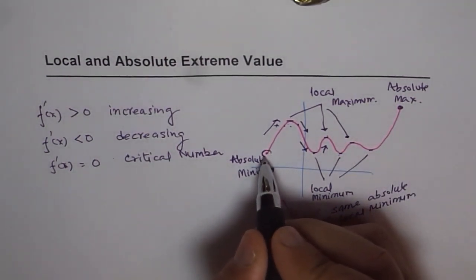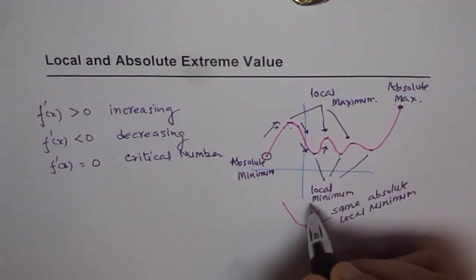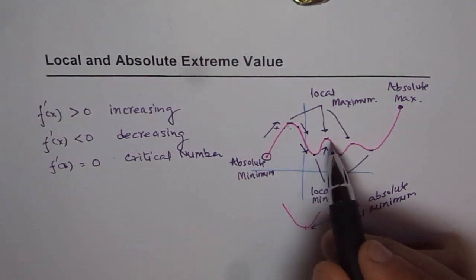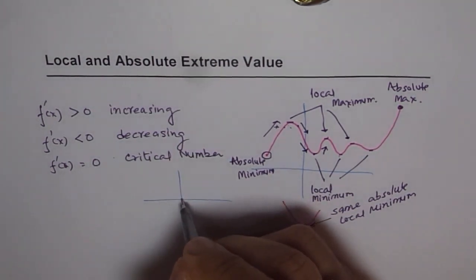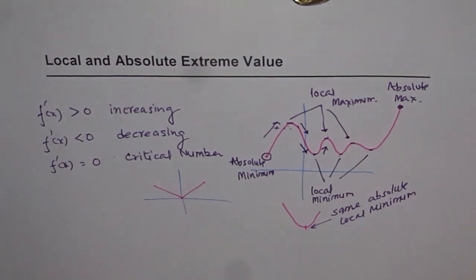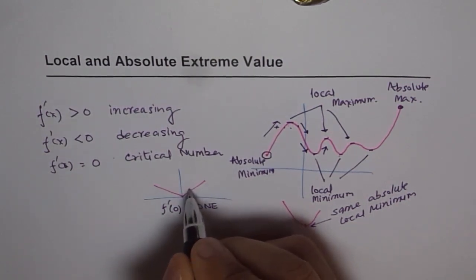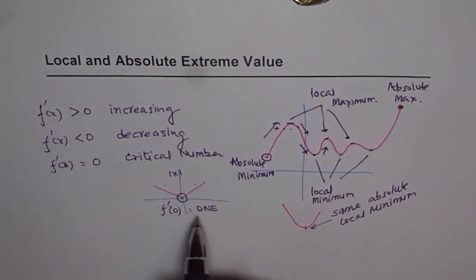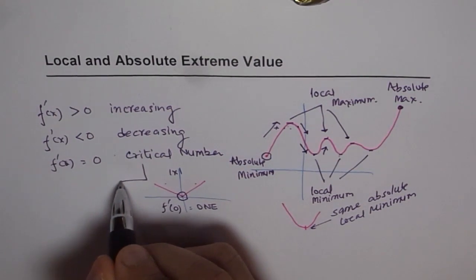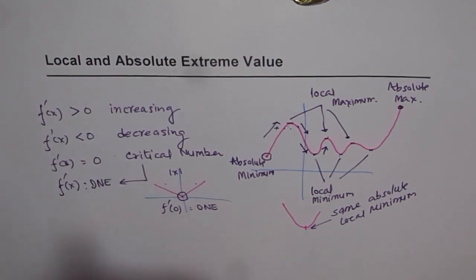We also need to consider the endpoints of the function, where we could always have absolute maximum or minimum. Additionally, there is one more critical case to highlight: functions like the absolute value function. For f(x) = |x|, the derivative f'(0) does not exist — the derivative is 1 on one side and -1 on the other, but it does not exist at x = 0. So that is also a critical number. Critical numbers have two criteria: f'(x) = 0, or f'(x) does not exist.